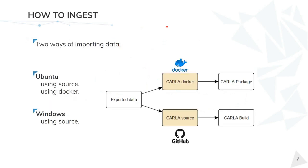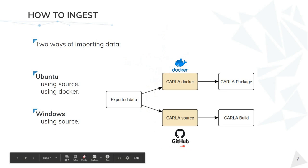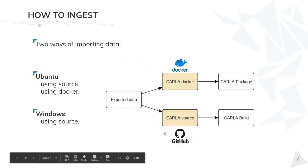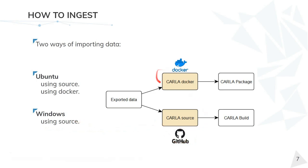Let's see how we can import data into Carla. We have two ways of doing it: one is using the Docker file and the other is using the source from GitHub. Depending on the platform, for Ubuntu we can choose either of the two, but for Windows we can only import using the source. However, importing from source we can do the same as with Docker, so we are not limited.